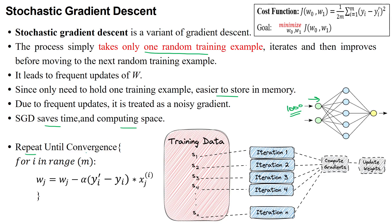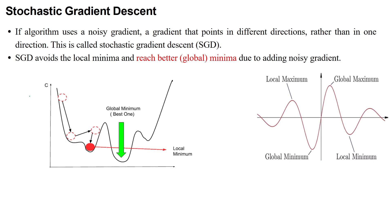This process has to be repeated until reaching the convergence point, meaning reducing the error close to zero. The formula used to update the weights is: new weight equals old weight for that particular feature minus alpha multiplied by the predicted output minus the actual output, multiplied by the associated feature for that weight. Here, i represents the sample index and j represents the feature number.